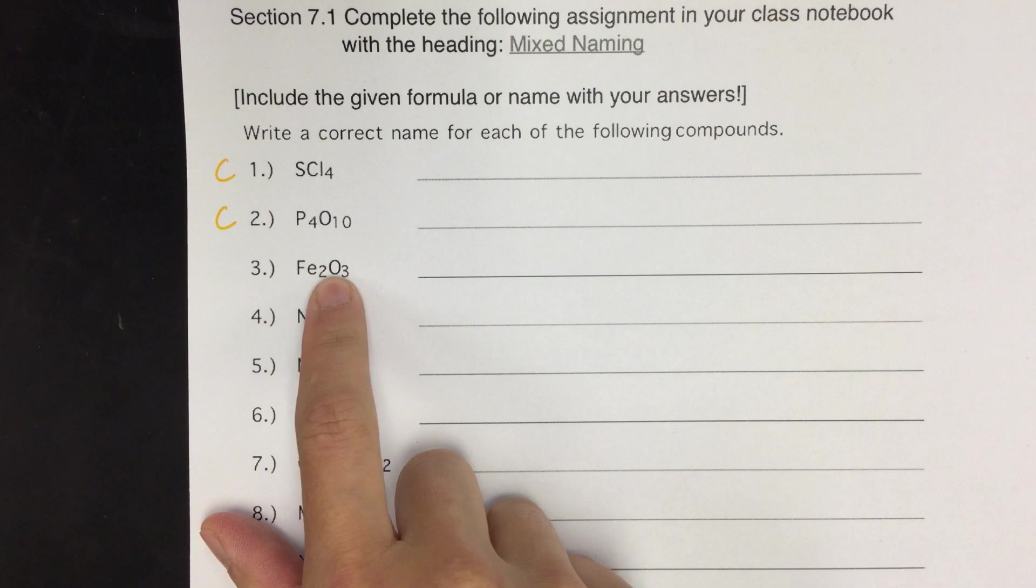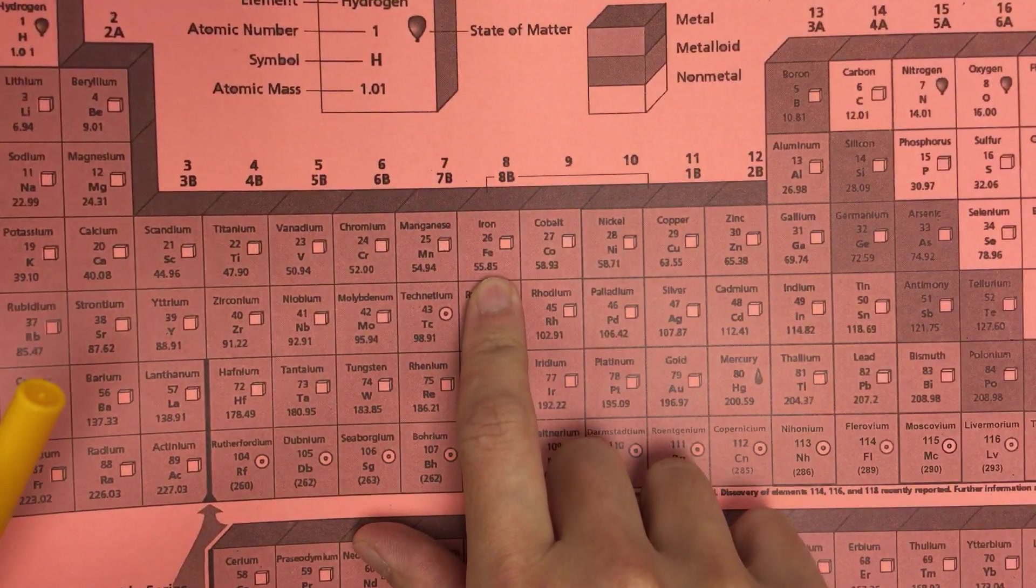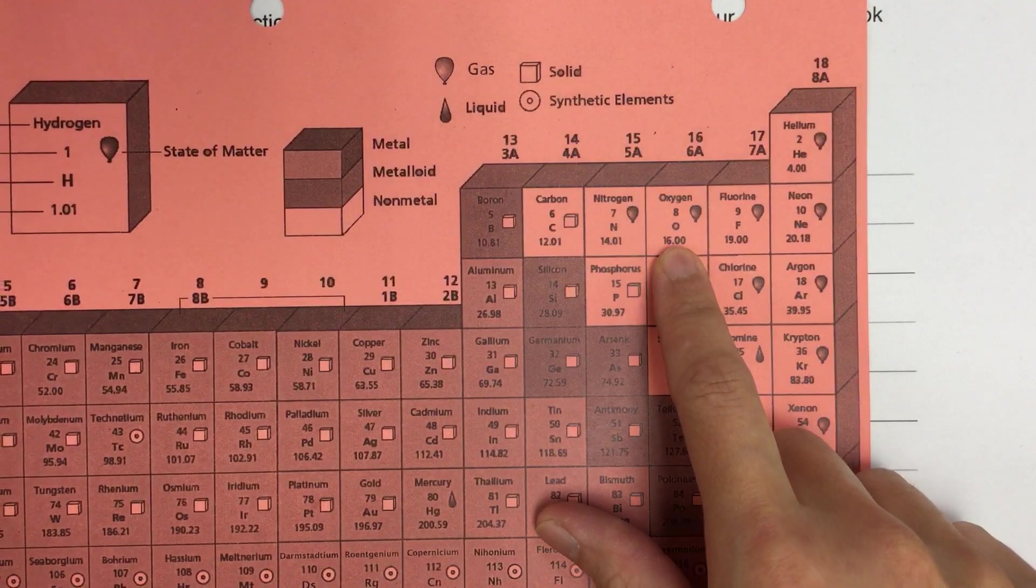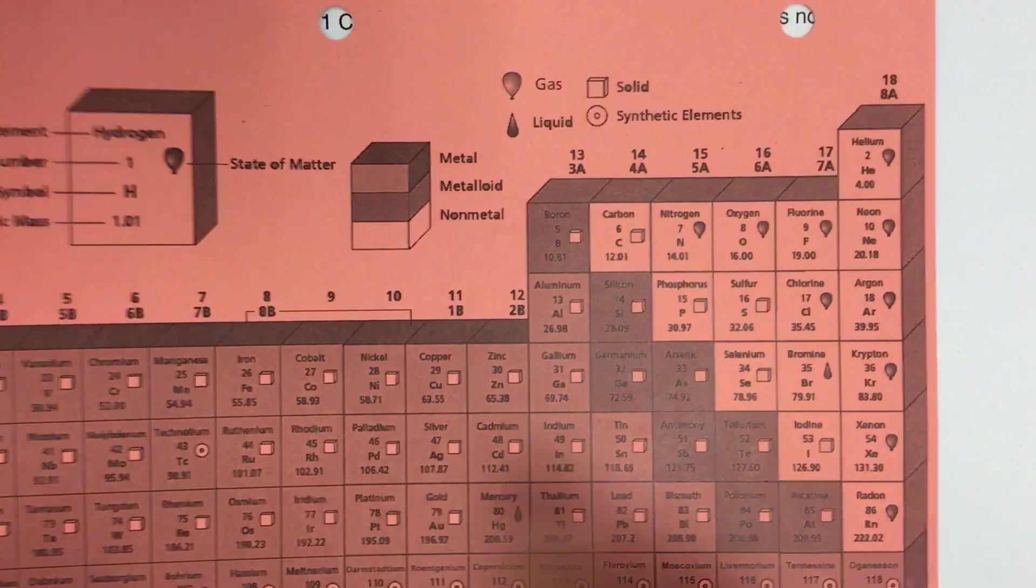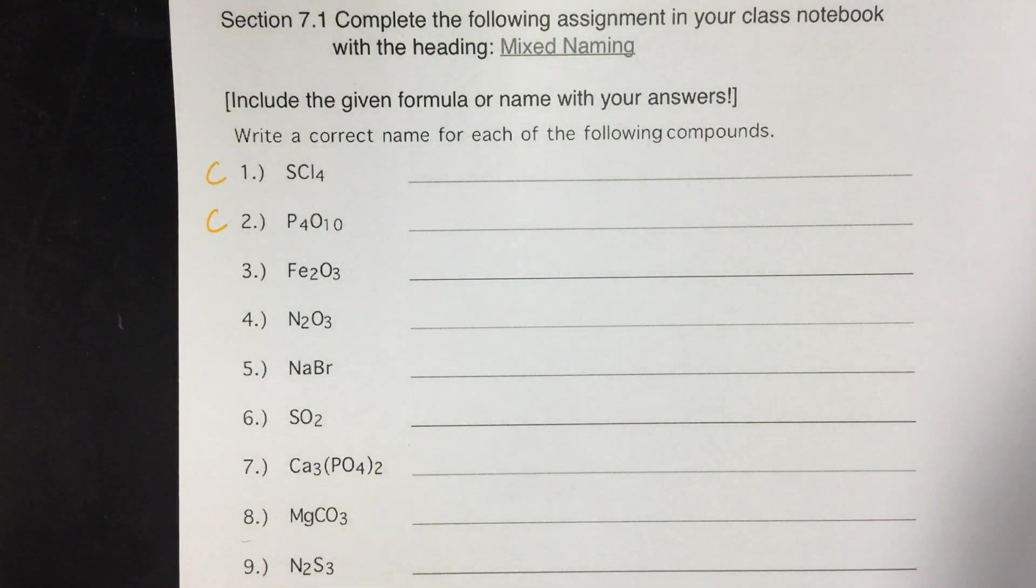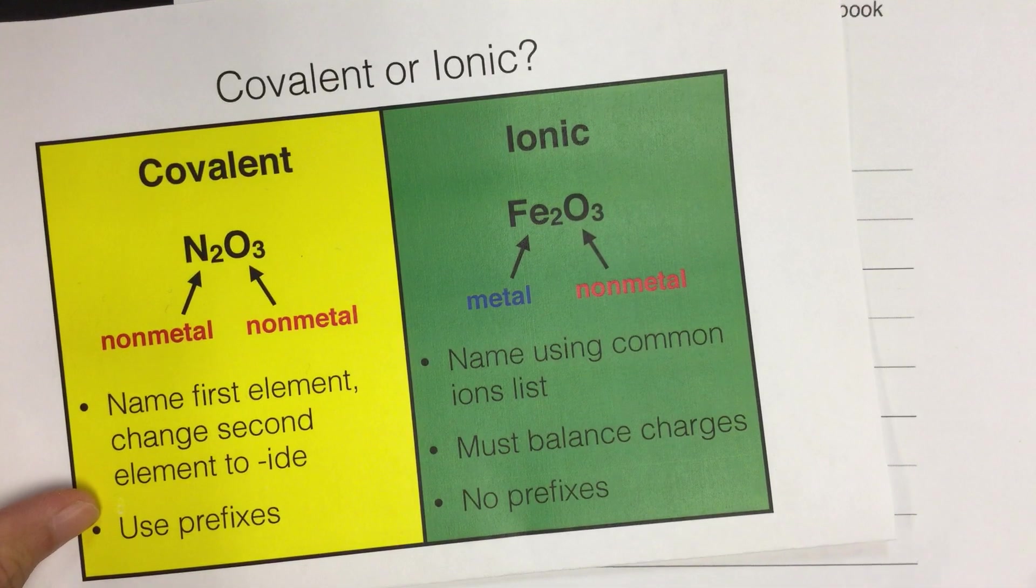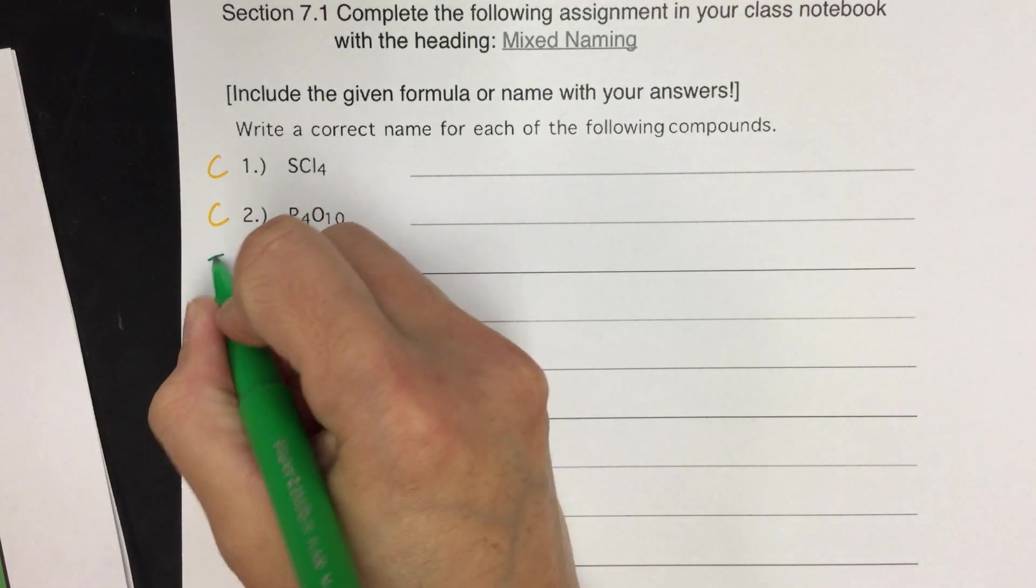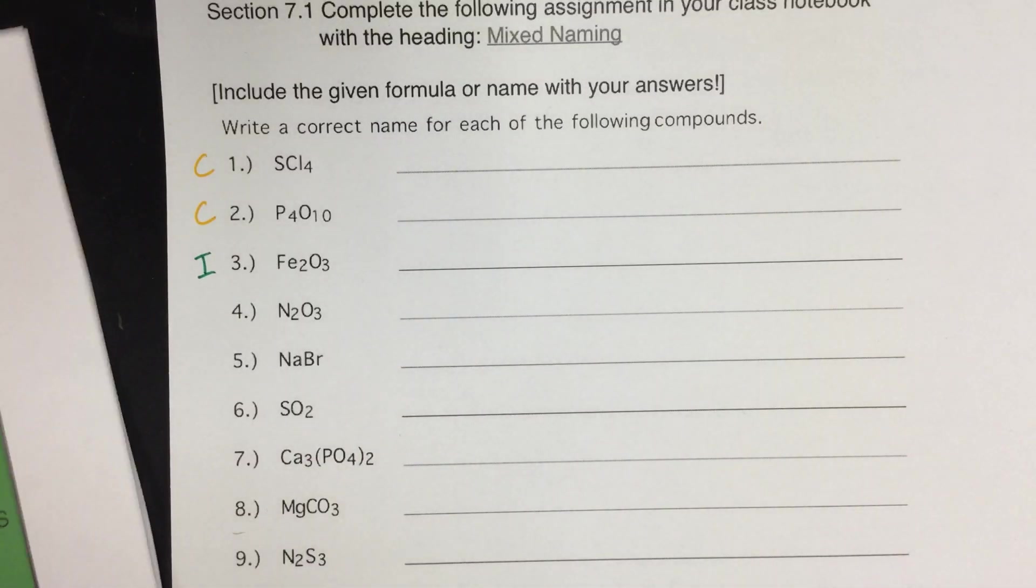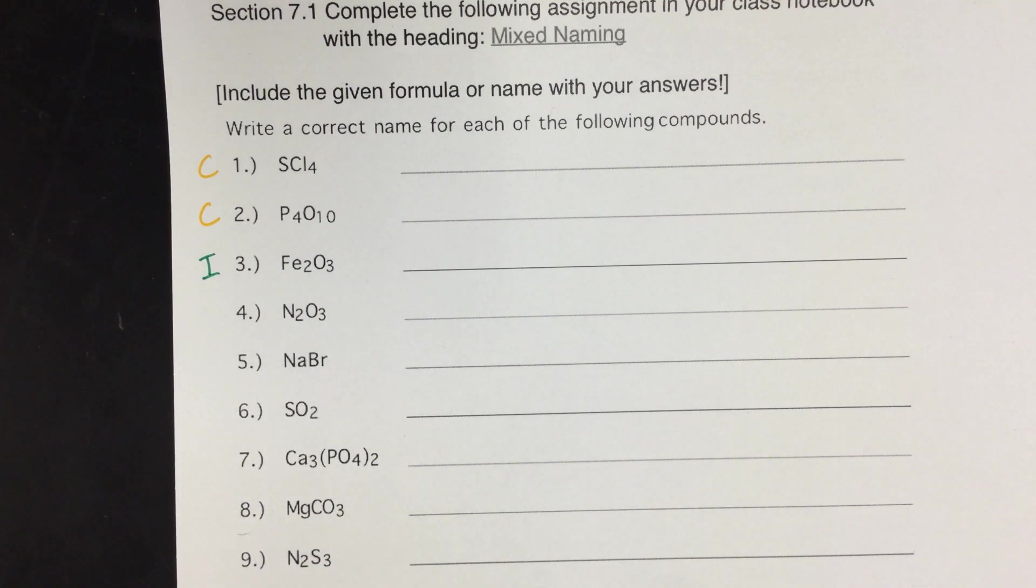Number three has iron and oxygen. So iron's right here, oxygen's here. So this time we have a metal and a non-metal, and when that happens, according to our notes here, a metal and a non-metal means it's an ionic compound. So that would have different naming rules. Again, if you want examples of how to actually name these, watch the videos for those.